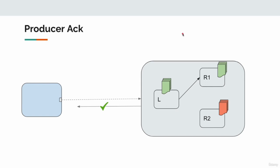Now let's consider another scenario: replication factor set to three — one leader, two followers — and acknowledgement is set to all. If one node goes down, should we wait for everyone to respond? No. ACKS all basically means the leader and the in-sync followers. Since that node went down, it's no longer in-sync. As long as the remaining two are in-sync, we will be getting acknowledgement. But when that node comes back up, the data will be replicated and they will all be in-sync again.